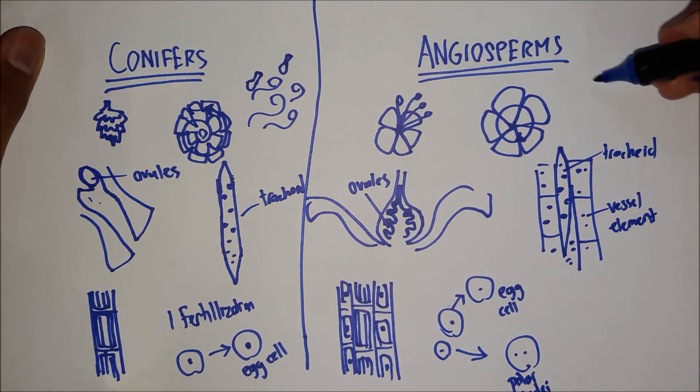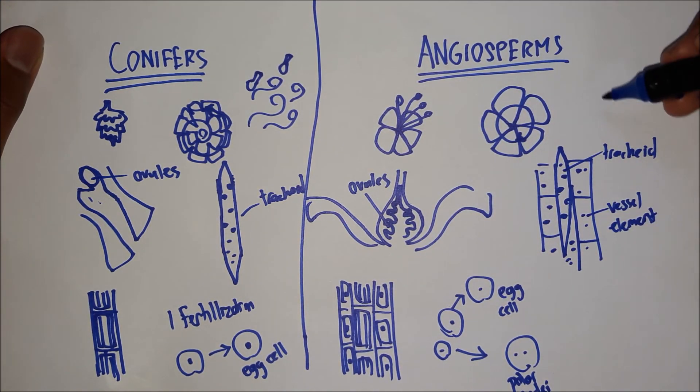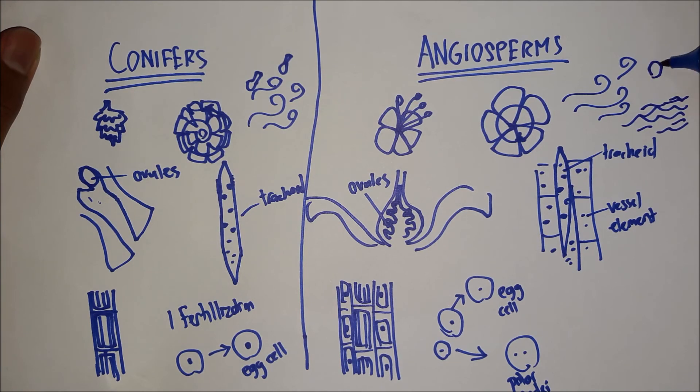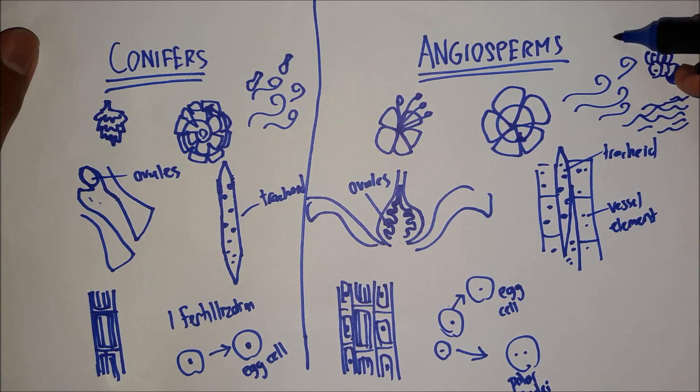While in flowering plants, they have various pollinating agents ranging from wind to water. There may also be some insects like bees, for example. Or even animals.